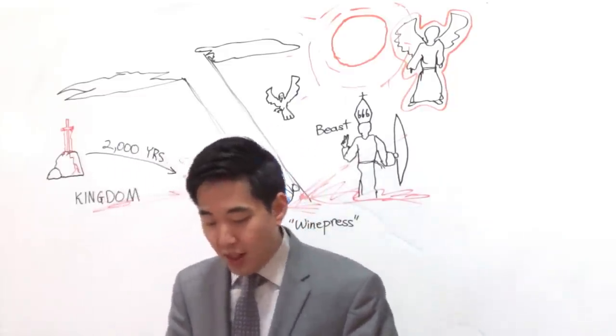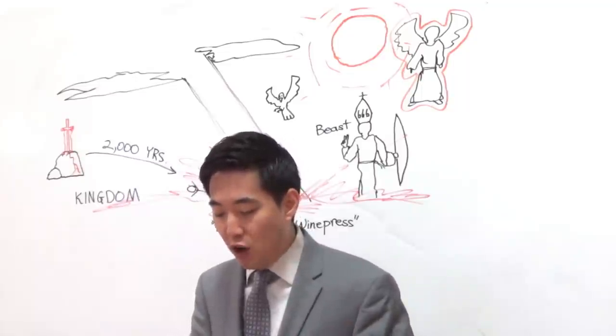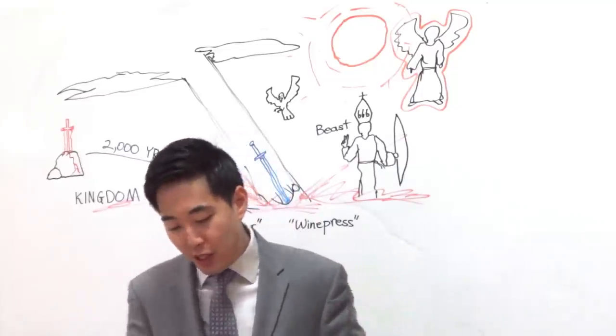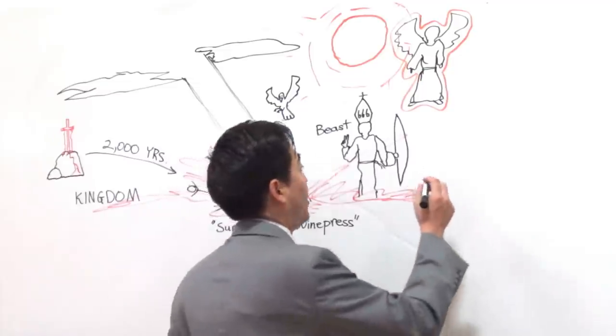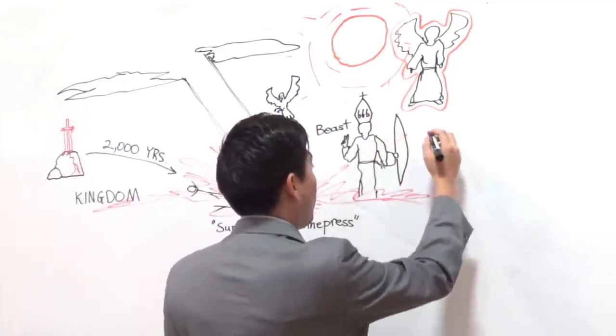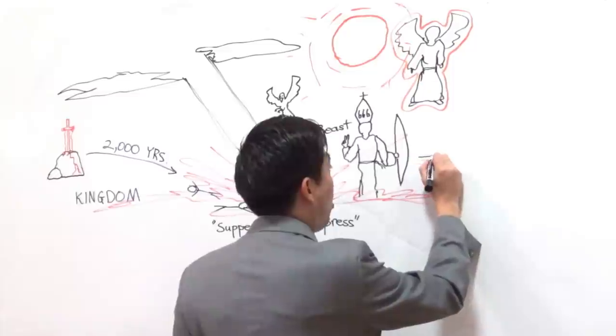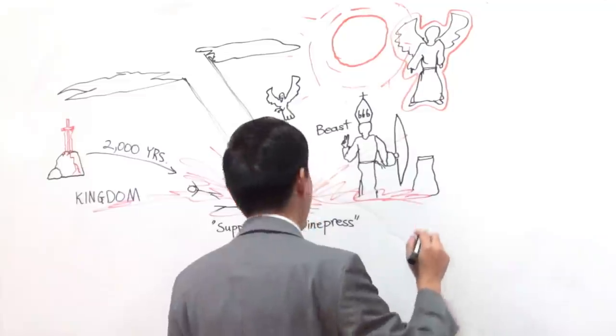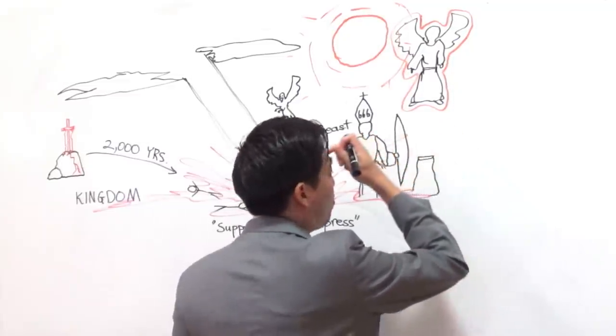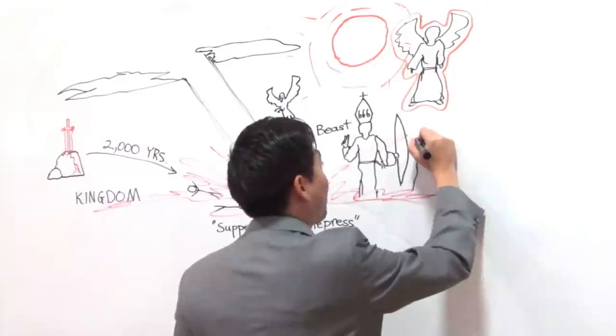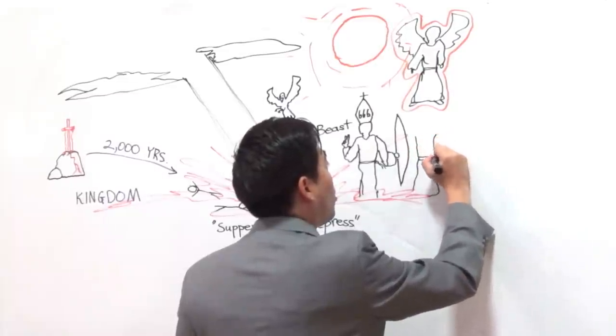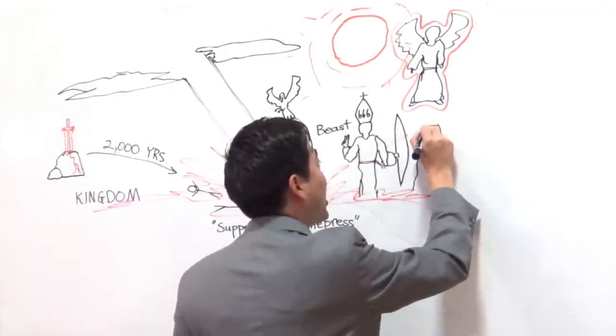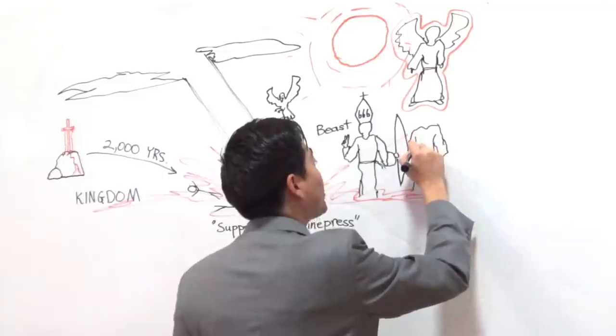Verse 20: And the beast was taken. And with him the false prophet. So the beast, he's taken. And notice who accompanies him is the false prophet. Now, just real quick as I draw this. You might recall in my Revelation video during the lockdown. I mentioned to you that the pope, he would most likely be a Catholic figure. Whereas the false prophet, it would make more sense to see him as a Muslim figure.